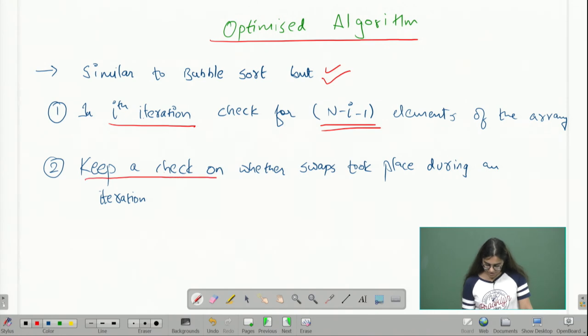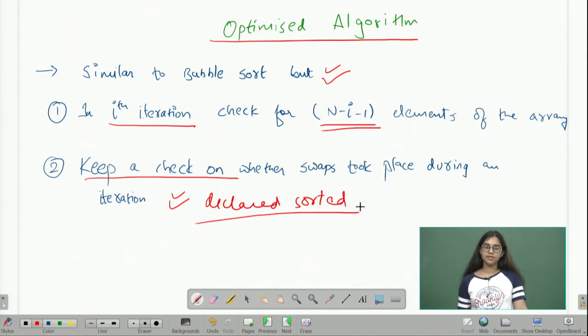Secondly, we keep a check on whether the swaps took place during an iteration or not. As we looked at the previous example, in an iteration, if there are no swaps taking place, that means that all adjacent elements are correctly ordered with respect to each other, or in other words, the array is already sorted. If we encounter such a condition, we can declare our array sorted and we do not need to run any further iterations. Thank you.